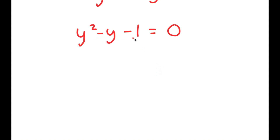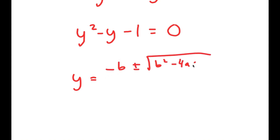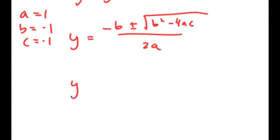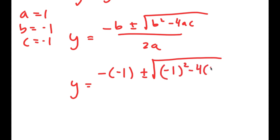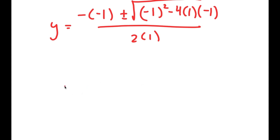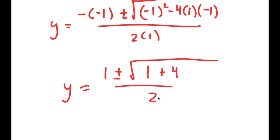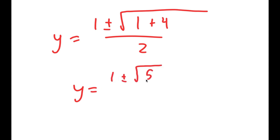So I get y squared minus y minus 1 is equal to 0. Now what we have here is a quadratic equation, and to solve this I'm going to use the quadratic formula, which is negative b plus or minus the square root of b squared minus 4ac, all over 2a. In this case, a is 1, b is negative 1, and c is negative 1. So I get y equals negative of negative 1 plus or minus the square root of negative 1 squared minus 4 times 1 times negative 1, all over 2 times 1.